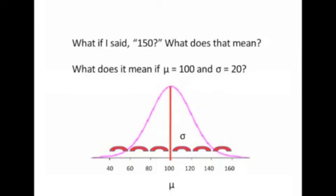Look to the right. We go from 100 to 120. There's one standard deviation. From 120 to 140, there's another standard deviation. And from 140 to 160, there's another. We could say that 160 lies three standard deviations above the mean. This is so clever.